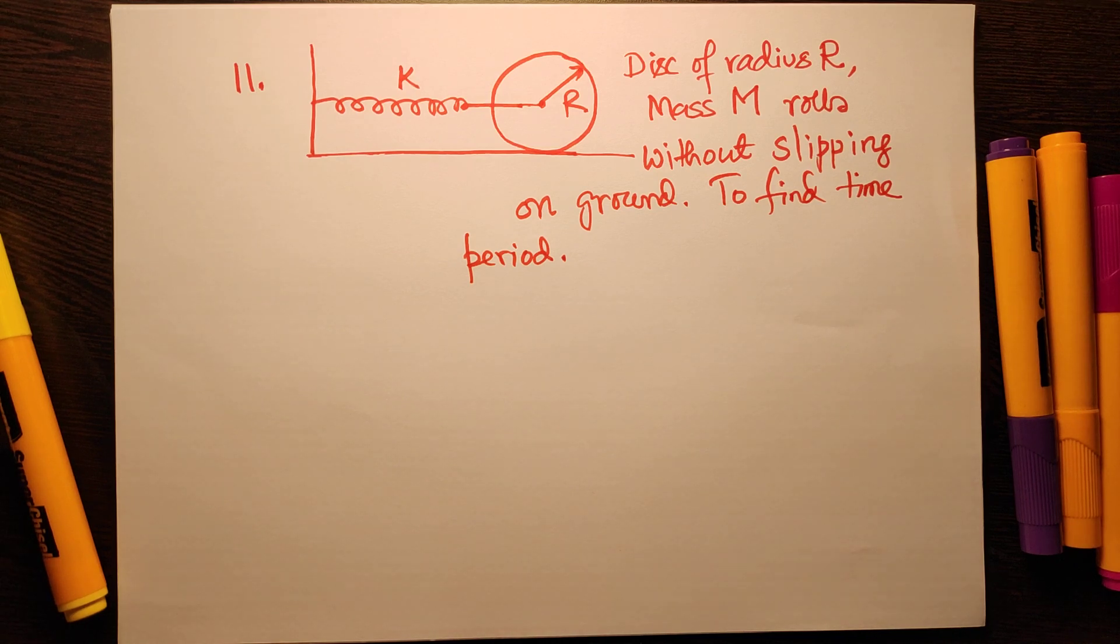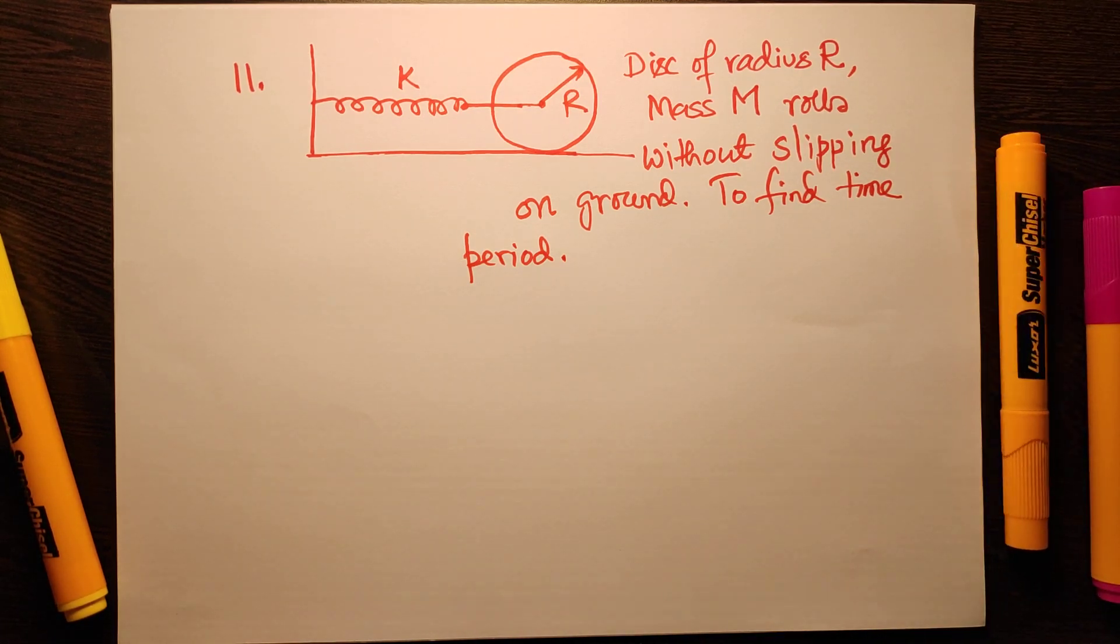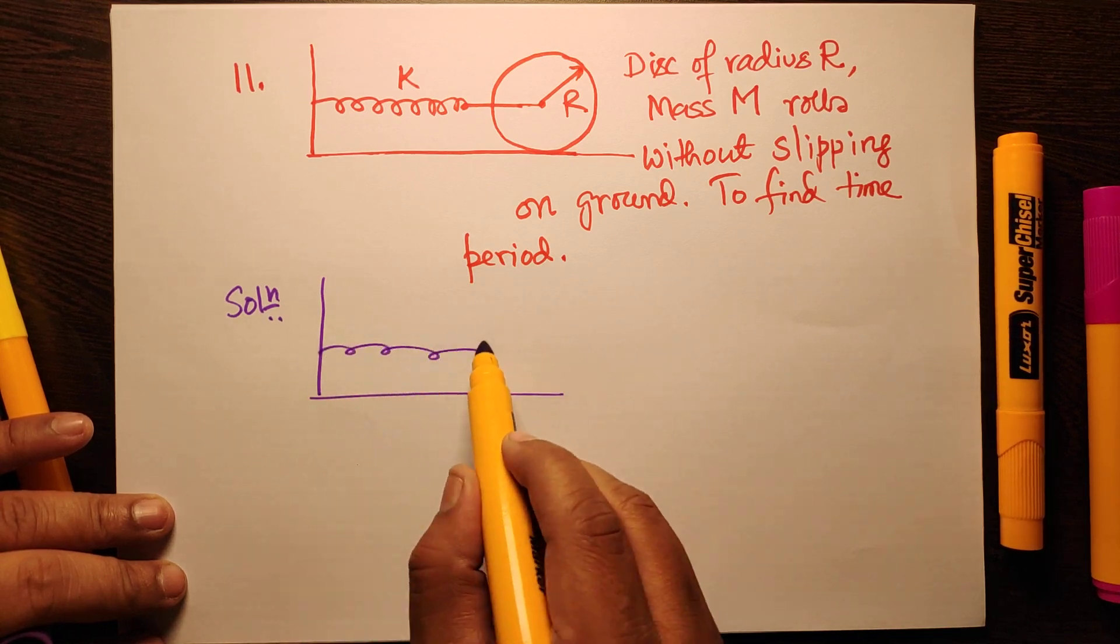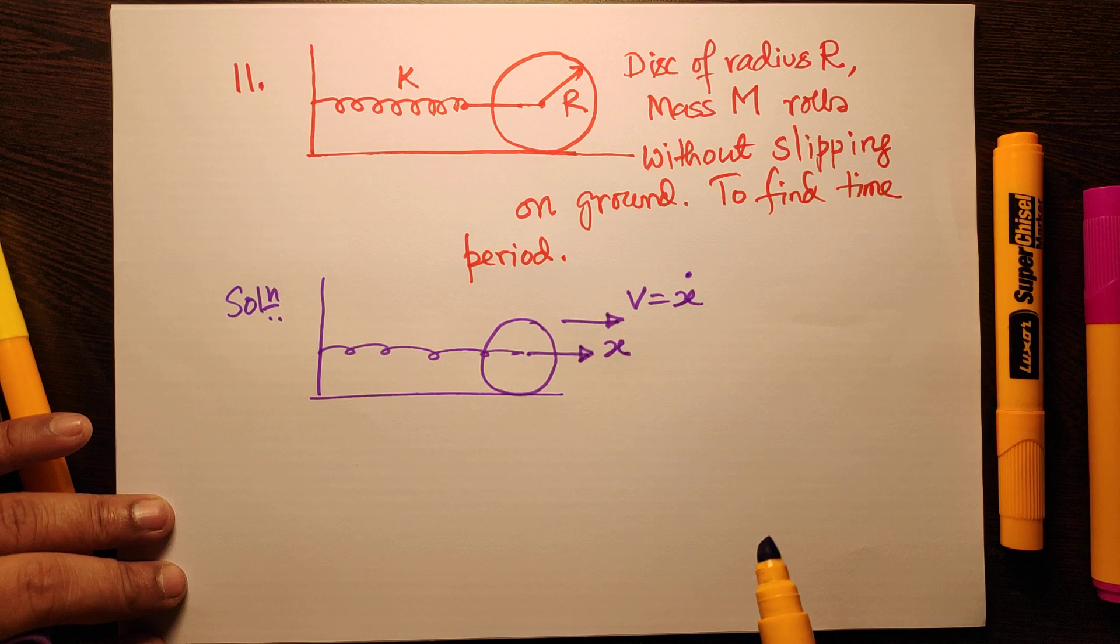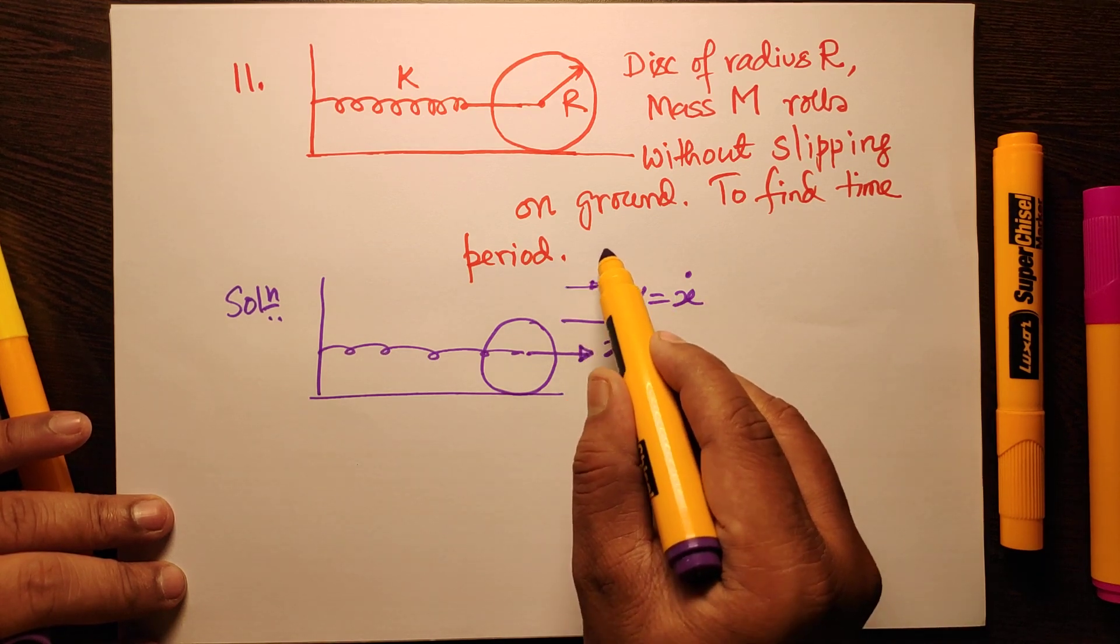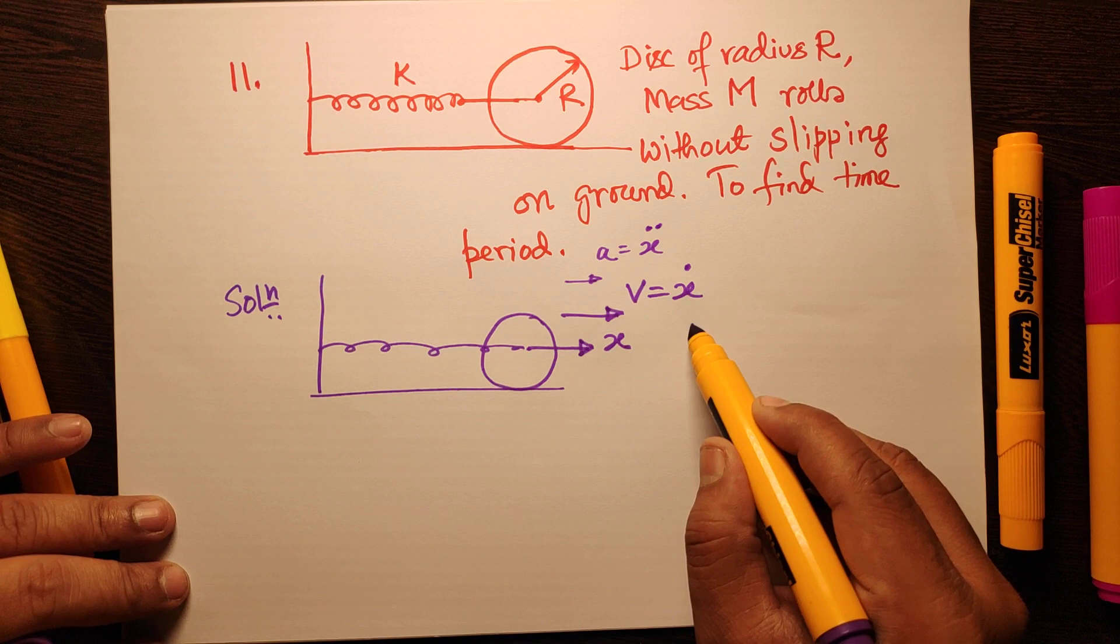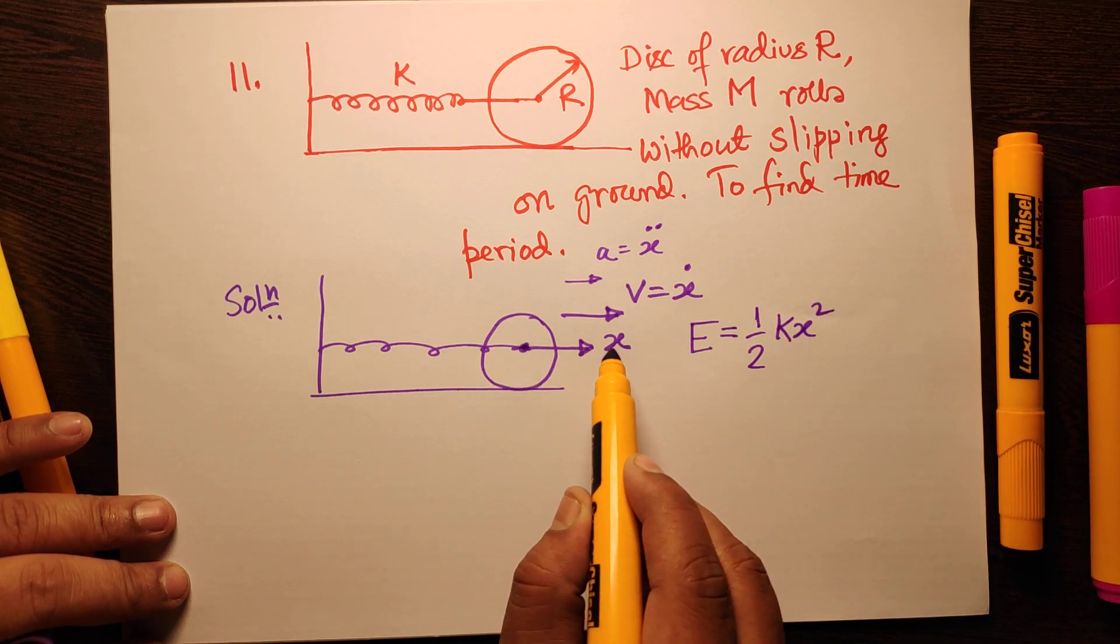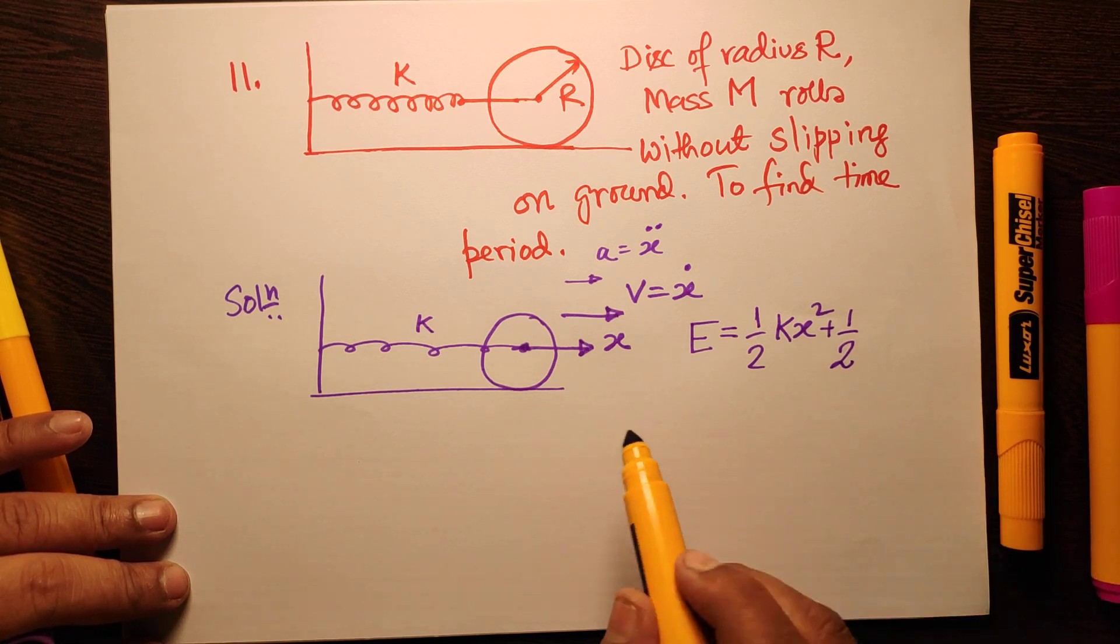We can also solve this by the traditional force and torque method, but that will take more time here. Here I can write: solution - suppose the center of the disk goes forward by a distance x, and hence you can write v equal to ẋ and acceleration equal to ẍ. I can write E equal to half kx², as this disk, the center of the disk, moves forward by x. The extension in the spring is x, half kx² plus half -